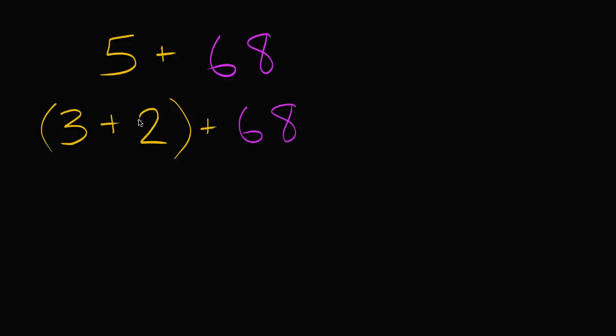And once again, the reason why I took this two out is because I said, hey, what do I have to add to 68 to get to 70? So now I can just rewrite this as three plus two plus 68. But now I can add the two to the 68. So two plus 68 is going to be, two plus 68 is 70.